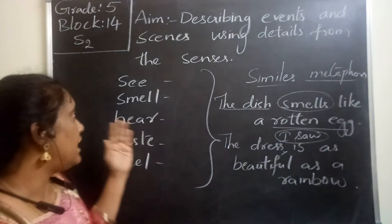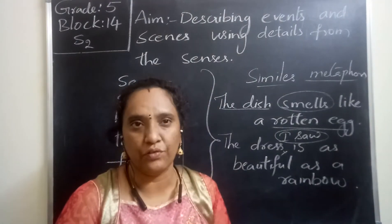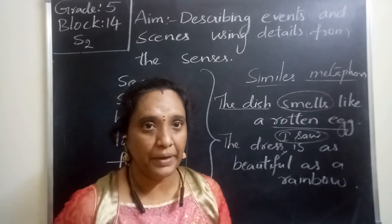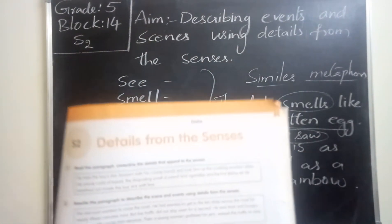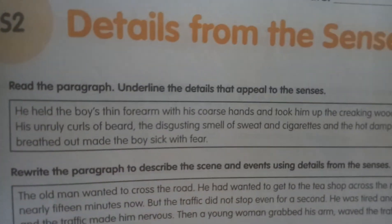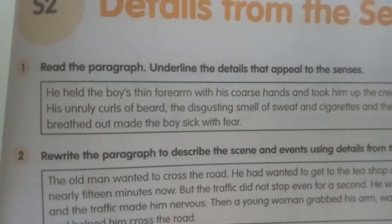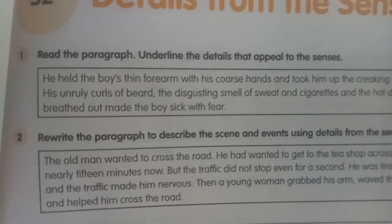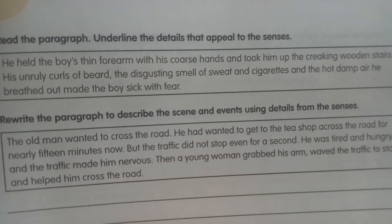You can use similes, senses, and even order words to write very beautifully in poems, letters, or any form of writing. Now, based on this, let us complete volume page number 31, 'Details from the Senses.' Go through the details and read the paragraph, then underline the details that appeal to the senses.